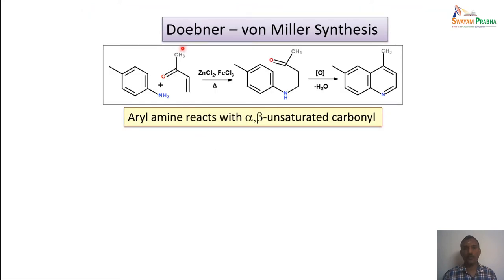In the Doebner-Müller reaction, the alpha-beta unsaturated carbonyl compound reacts with substituted anilines in the presence of zinc chloride and FeCl3 — a Lewis acid-catalyzed reaction. This leads to an intermediate which again undergoes cyclization to give the cyclized, substituted Quinoline moiety.